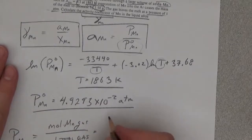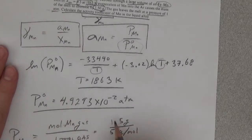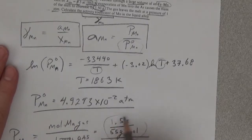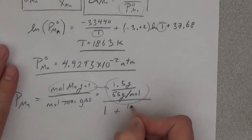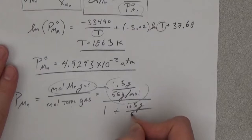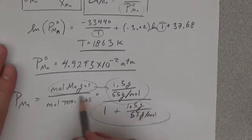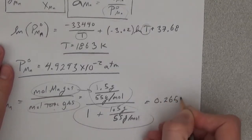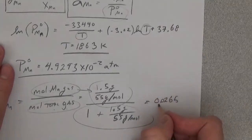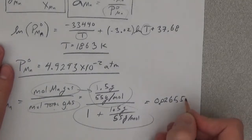The manganese that goes into the gas phase is 1.5 grams divided by 55.5 grams per mole. The total moles of gas is equal to 1 plus 1.5 grams divided by 55 grams per mole. This gives us a partial pressure of 0.02655 atm.